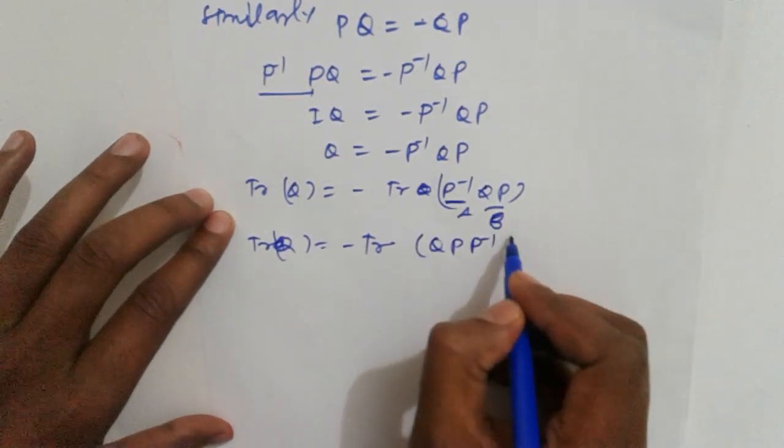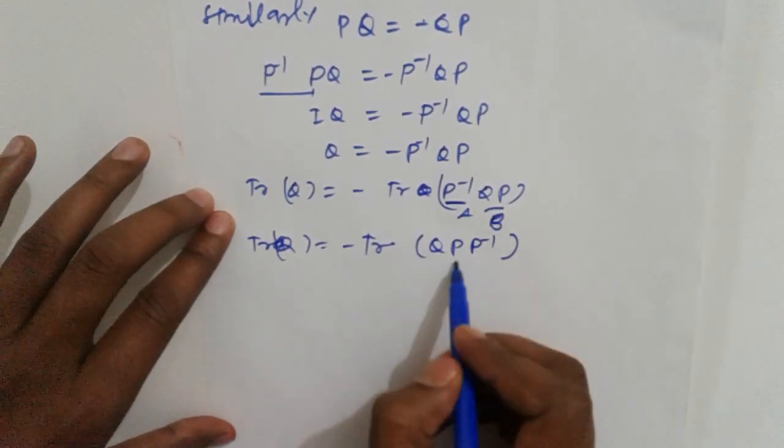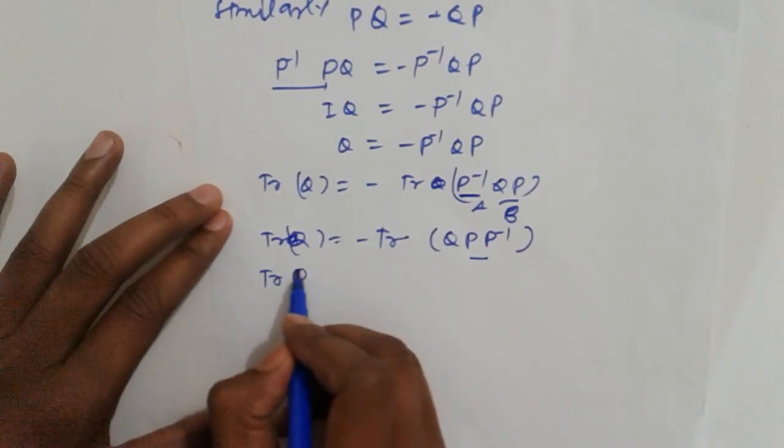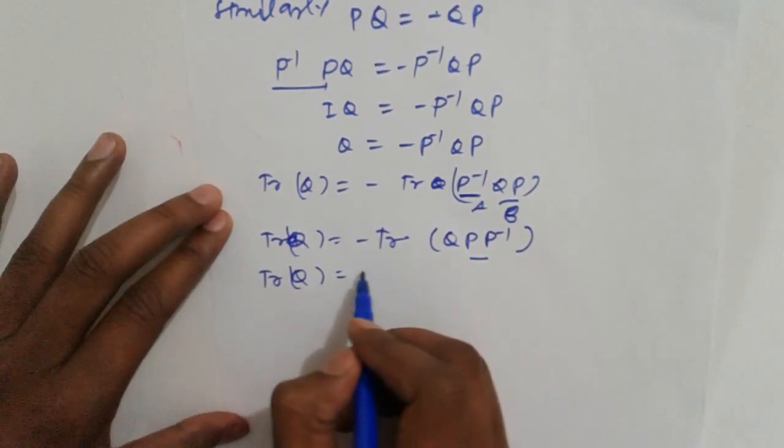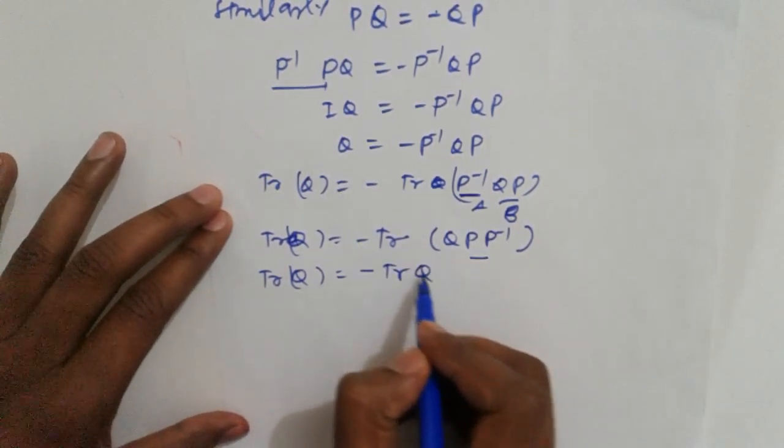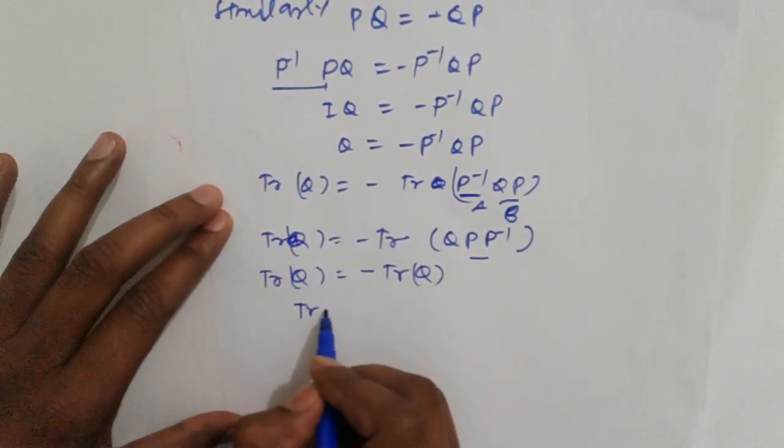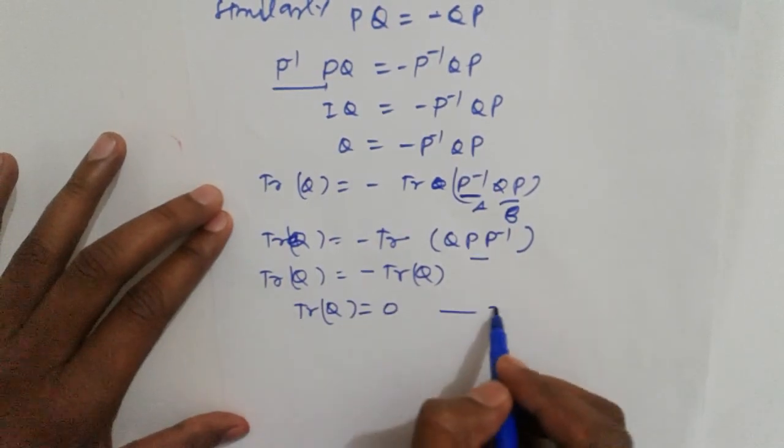This is QP and P inverse minus. That is I, meaning trace of Q equals minus trace of Q. So trace of Q equals zero. This is equation 2.